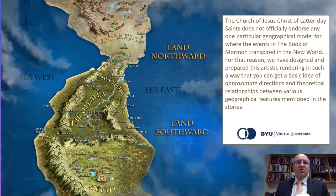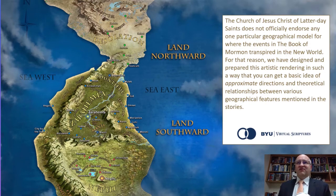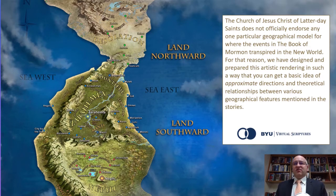The Book of Mormon map does not purport to be the official map of events and locations in the Book of Mormon. The Church of Jesus Christ of Latter-day Saints does not officially endorse any one particular geographical model for where the events of the Book of Mormon transpired in the New World. For that reason, they have designed this artistic rendering so you can get a basic idea of approximate directions and theoretical relationships between various geographical features mentioned in the stories.